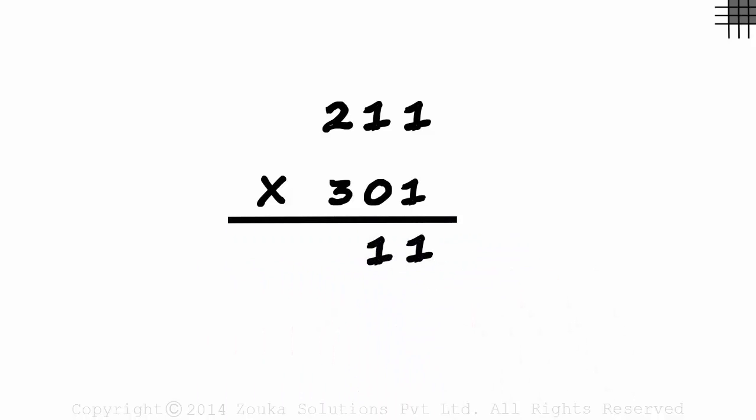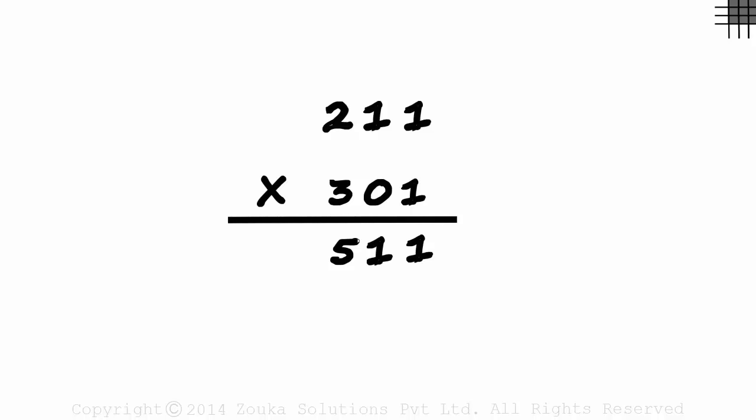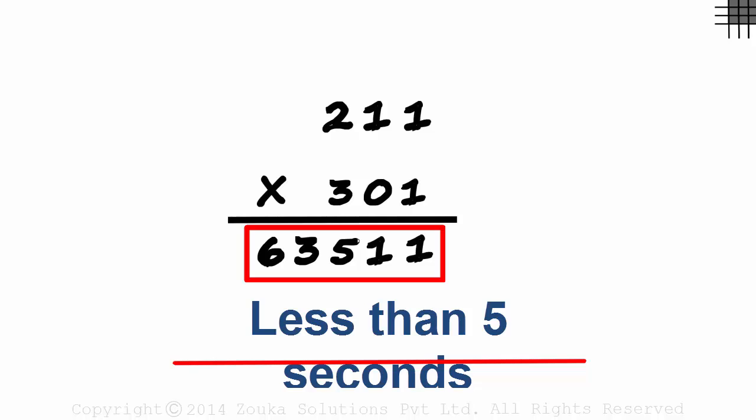Okay, I don't know how you did it, but let's see how much time I take. One times one is one, one plus zero is one, two plus zero plus three is five, three plus zero is three, and two times three is six. That's our answer! 63,511. Didn't take much time, did I?